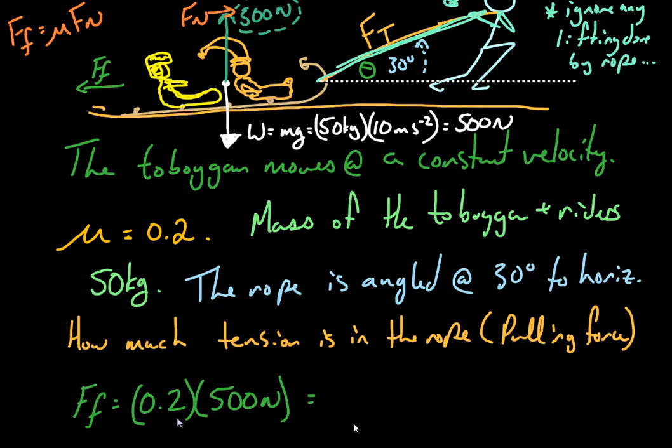So we should be able to then calculate the force of friction, which would point directly in this direction on this toboggan. FF equals 0.2 times 500 newtons. What's 0.2 times 500? What's 20% of 500? So there's 100 newtons of friction opposing the motion, and that points directly in this direction back here.